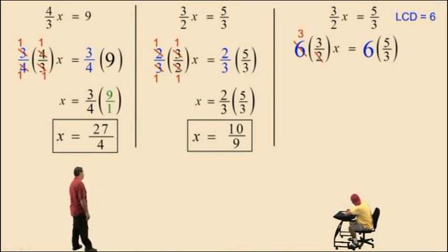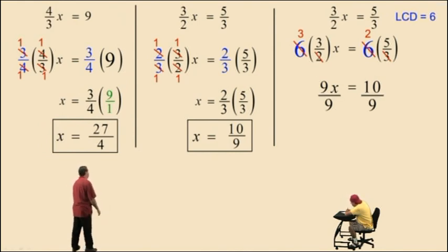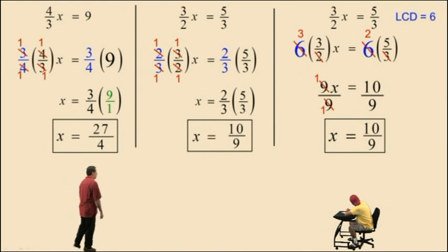6 divided by 2 is 3, 3 times 3 is 9, but don't forget it's 9x. On the right-hand side, 6 divided by 3 is 2, 2 times 5 is 10, and we get 10 on the right-hand side. Now, we have 9 times x on the left-hand side. To isolate that variable, to get rid of that multiplication, we need to divide out that 9. 9s cancel, leaving you with 1x on the left-hand side, and the right-hand side is 10 ninths. And that is your final answer there.